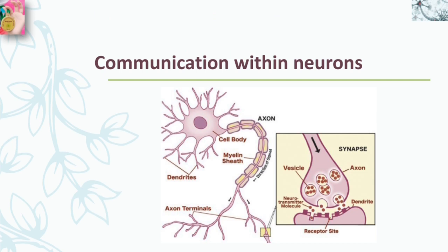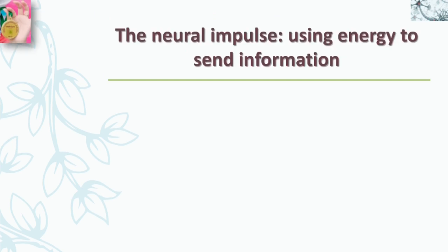As you will see, communication in and between neurons is a chemical process. If you haven't watched Part One of Lesson One, you can simply click on the link in the description and go ahead and watch that video. Now let's start with the neural impulse: using energy to send information.